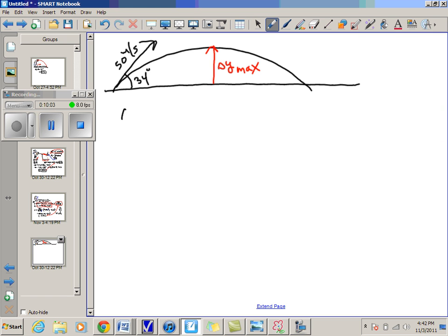So delta y max is going to be 50 sine 34 times t minus 4.9 t squared. The question is, what do we put in for t? What is the time that it takes the ball to get to the maximum height? So we've got to figure out what t value to put in here.